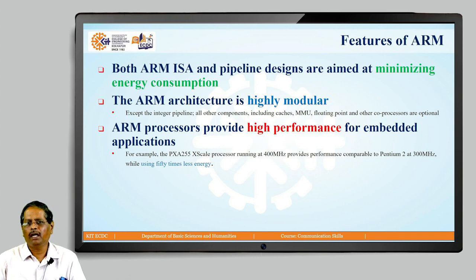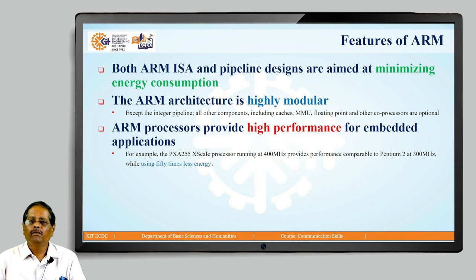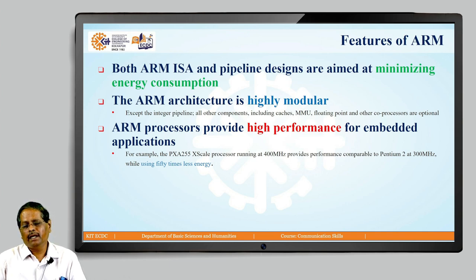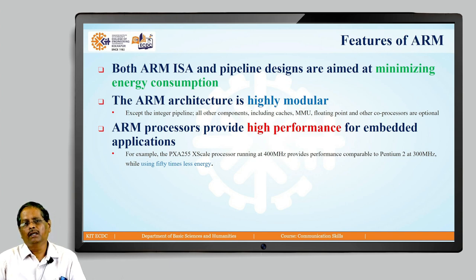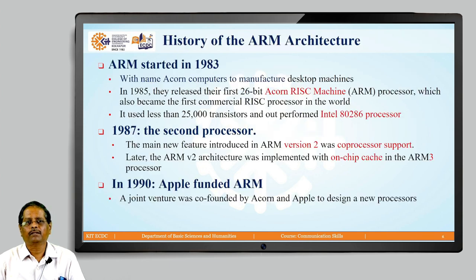ARM processor provides high performance for embedded applications. High performance comes from two factors: one is computational speed, and secondly, energy consumption. ARM offers comparatively better performance in comparison with general purpose processors.